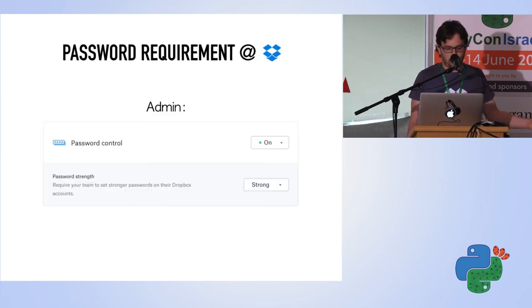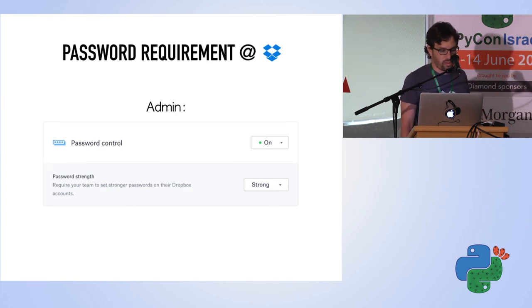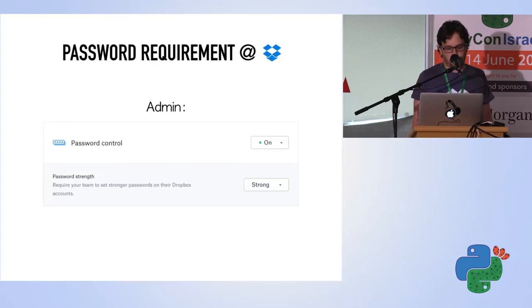This is how it would look like in Dropbox. We only have two buttons—one to turn the feature on and off, and the other one is to set the password strength. That's all.